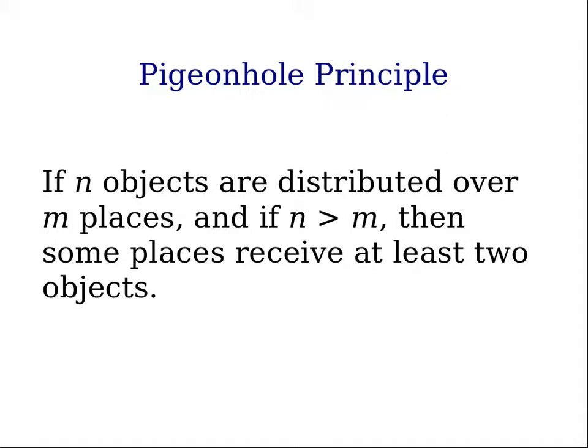The pigeonhole principle states that if we have n objects that are distributed across m different places, and if n is greater than m, then some of those places must receive at least two objects.